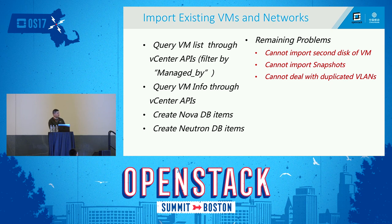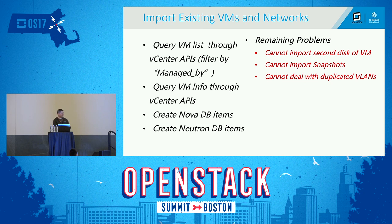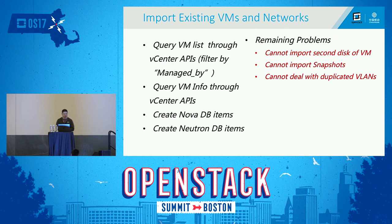After querying, we get detailed information about each VM, and we can create Nova DB items and Neutron DB items to register the virtual machine directly into OpenStack. However, we still have remaining problems: we cannot import the second disk of a virtual machine since there is no way to describe it in OpenStack, we cannot import snapshots, and we cannot deal with duplicate VLANs. We do not have solutions for these yet.